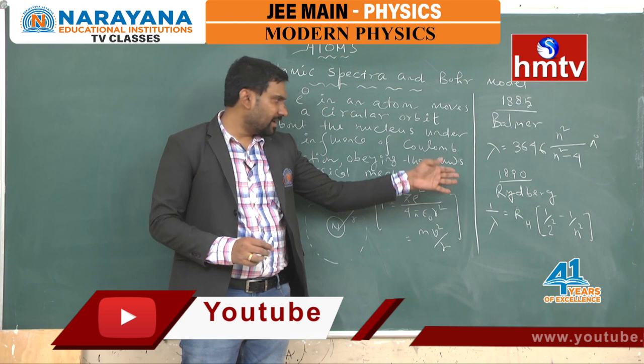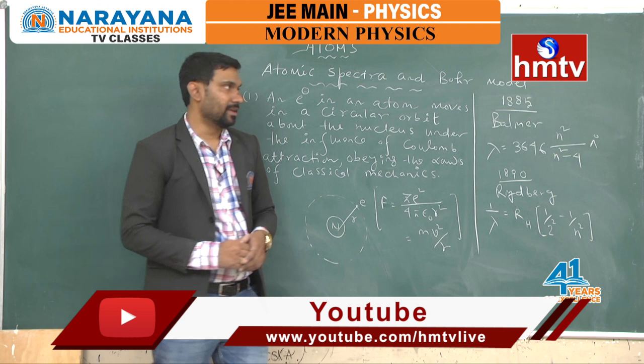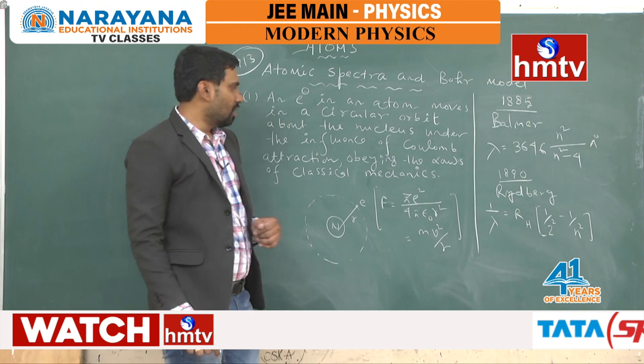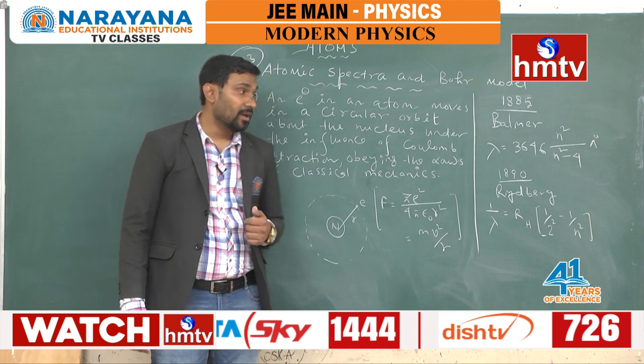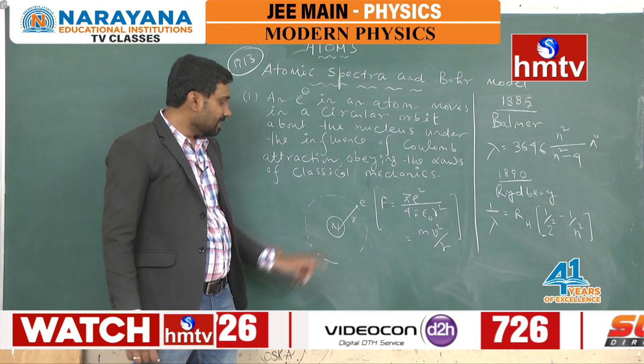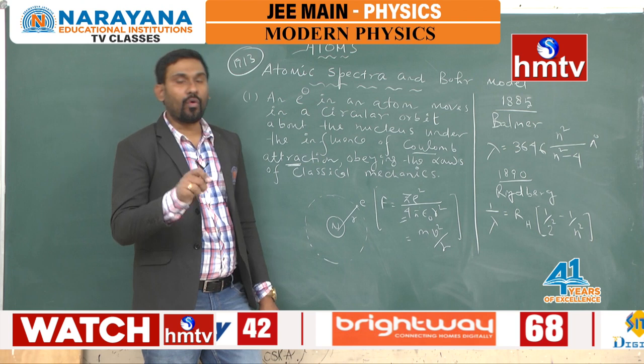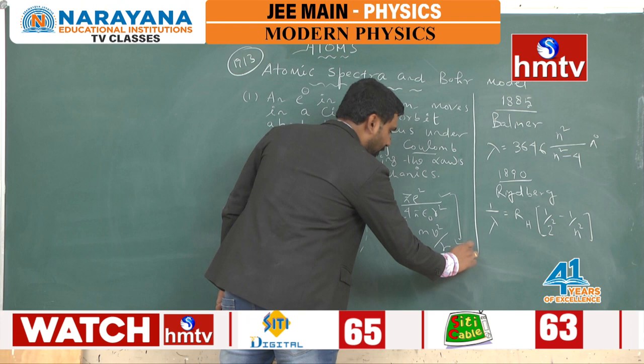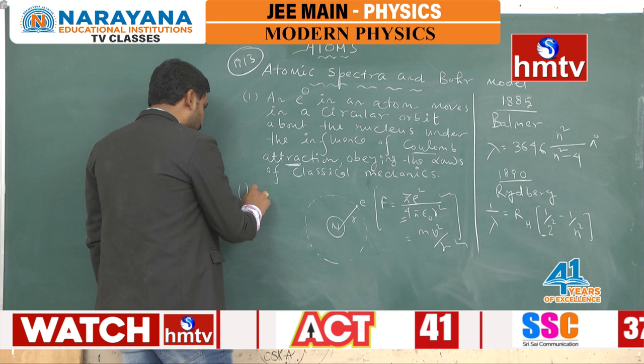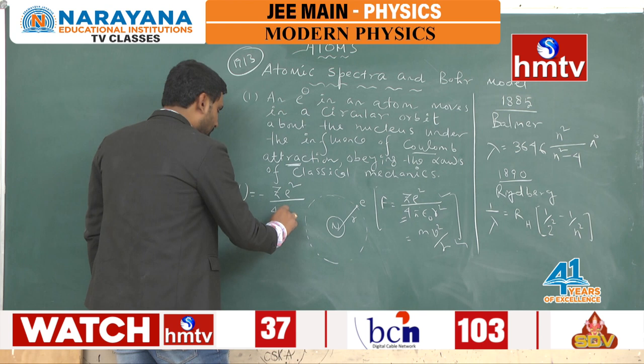After Balmer, Rydberg, and Rutherford all failed to give a complete picture, in 1913 — just two years after Rutherford — Bohr suggested a new model with several postulates. The first postulate states that electrons orbit the nucleus due to Coulomb's electrostatic attraction, obeying all laws of classical physics, with the electrostatic force balanced by the centripetal force. The total energy U = −Ze² / (4πε₀r), and the negative energy confirms that the orbits are stable.